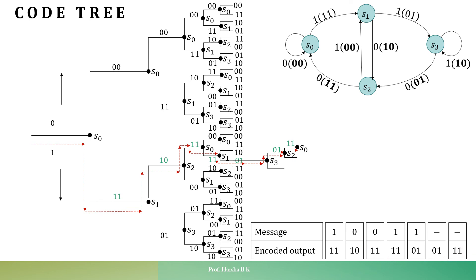For the given message 1,0,0,1,1, the complete encoded output sequence is: 1,1 — 1,0 — 1,1 — 1,1 — 0,1 — 0,1 — 1,1, which gives a total of 14 bits. This matches our expected encoded sequence length of n times (l plus m) equal to 14 bits.